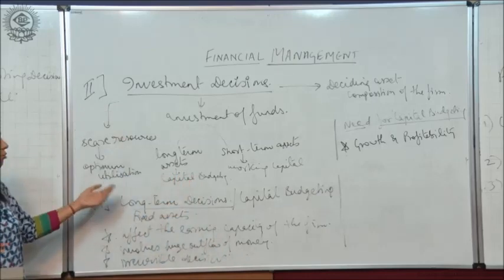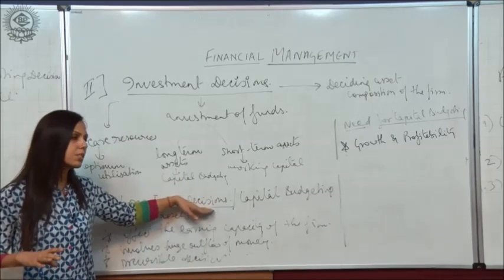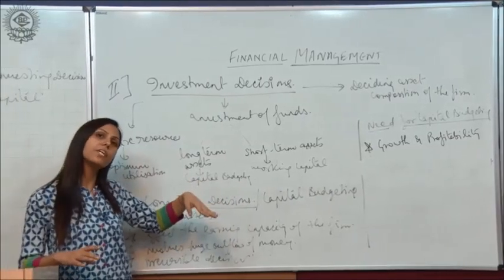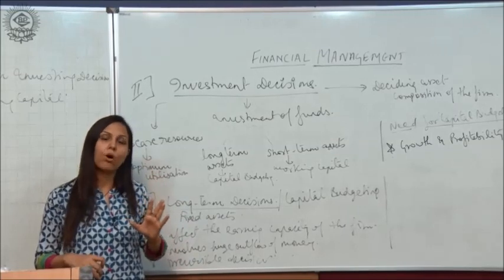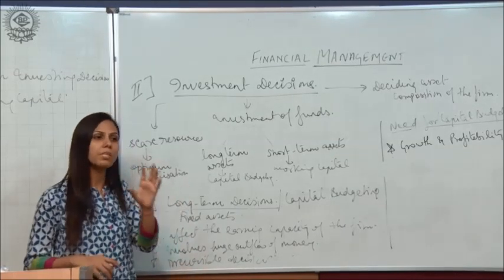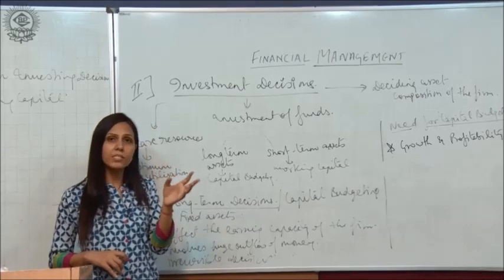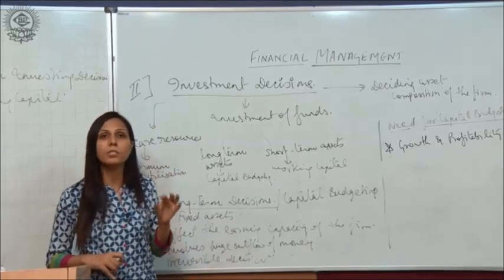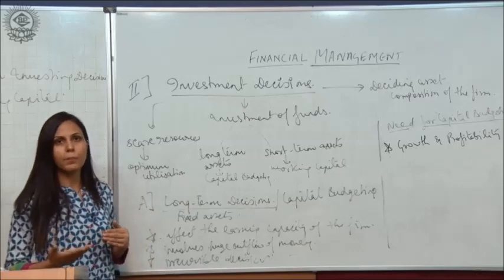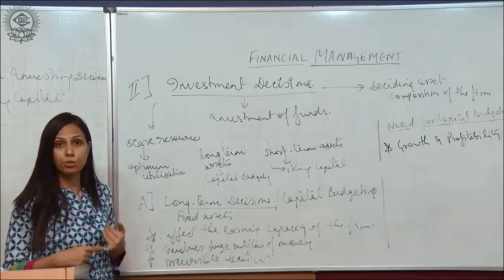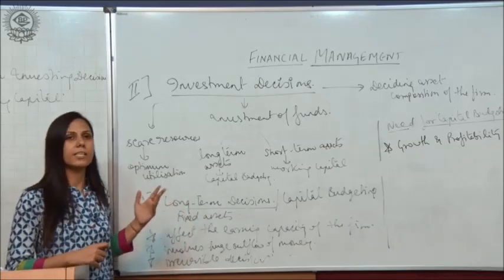Long-term decisions are the decisions related to the purchasing of fixed assets, also called capital purchasing — meaning how much amount we are going to invest in buying fixed assets. Fixed assets include, for example, building, furniture, and machinery.